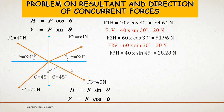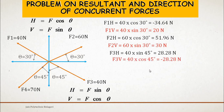Force F3 has its horizontal component positive. Since F3 is measured with respect to the y-axis, the horizontal component is F sin θ = 40 sin 45° = +28.28 N. The vertical component is F cos θ = 40 cos 45° = −28.28 N, negative because F3's vertical component acts downward.